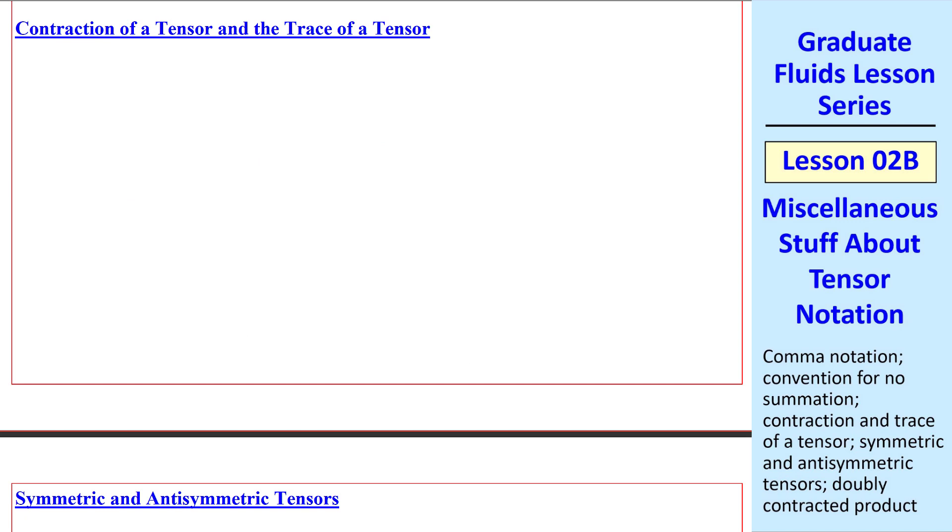Now let's consider the contraction of a tensor and the trace of a tensor. Contraction on i and j means change i and j to the same index. Consider, for example, a second-order tensor t, where in tensor notation we write it as tij.